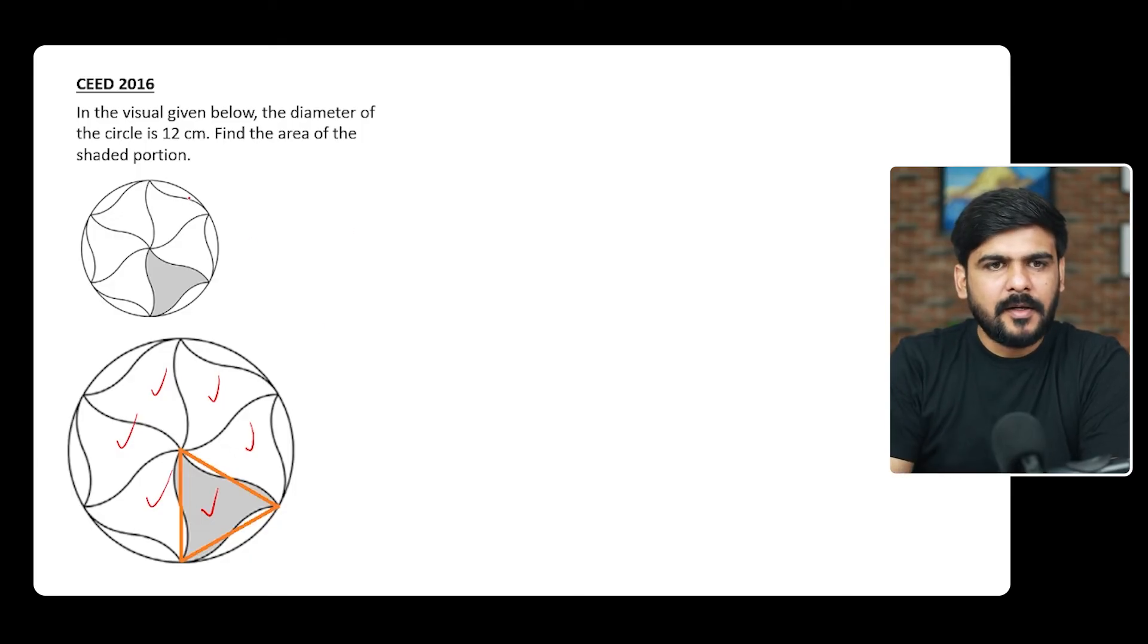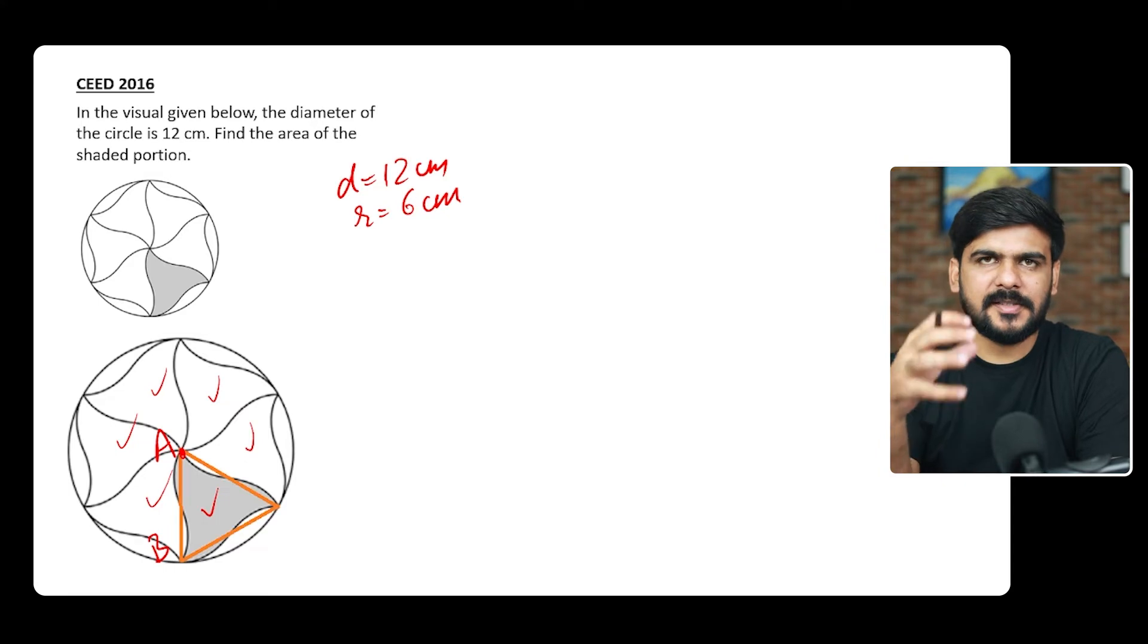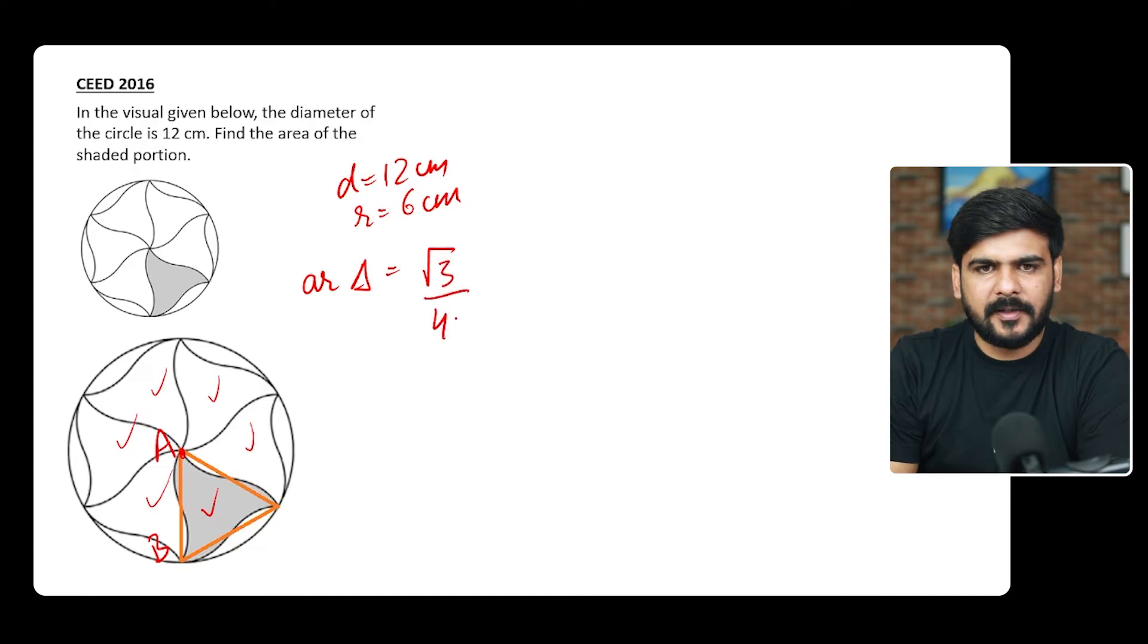Now we have given diameter of this circle as 12 centimeters. So radius would be exactly half, that is 6 centimeters, and this radius is the side of this triangle. Now it is an equilateral triangle, and area for equilateral triangles is √3/4 and the square of side.